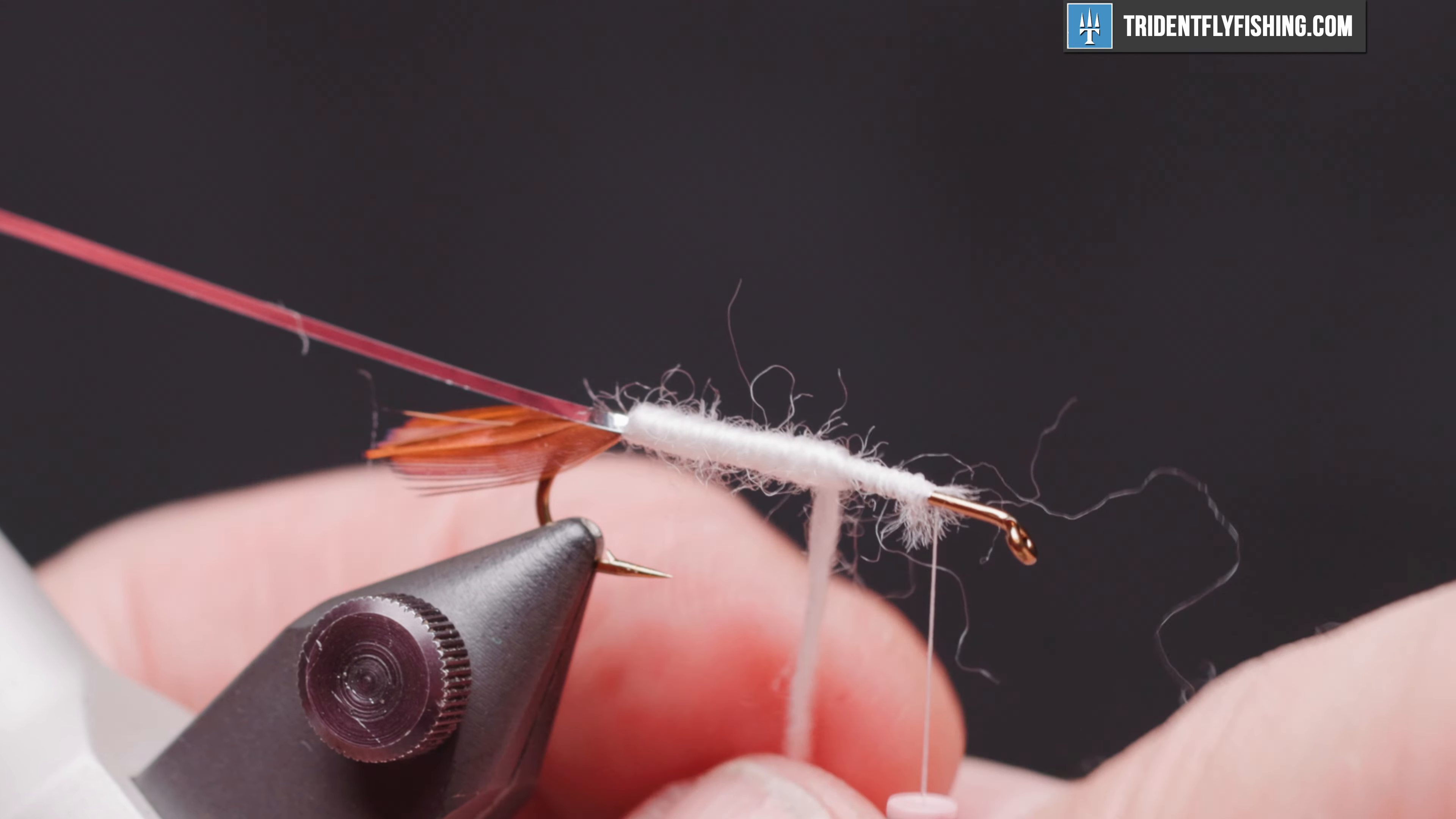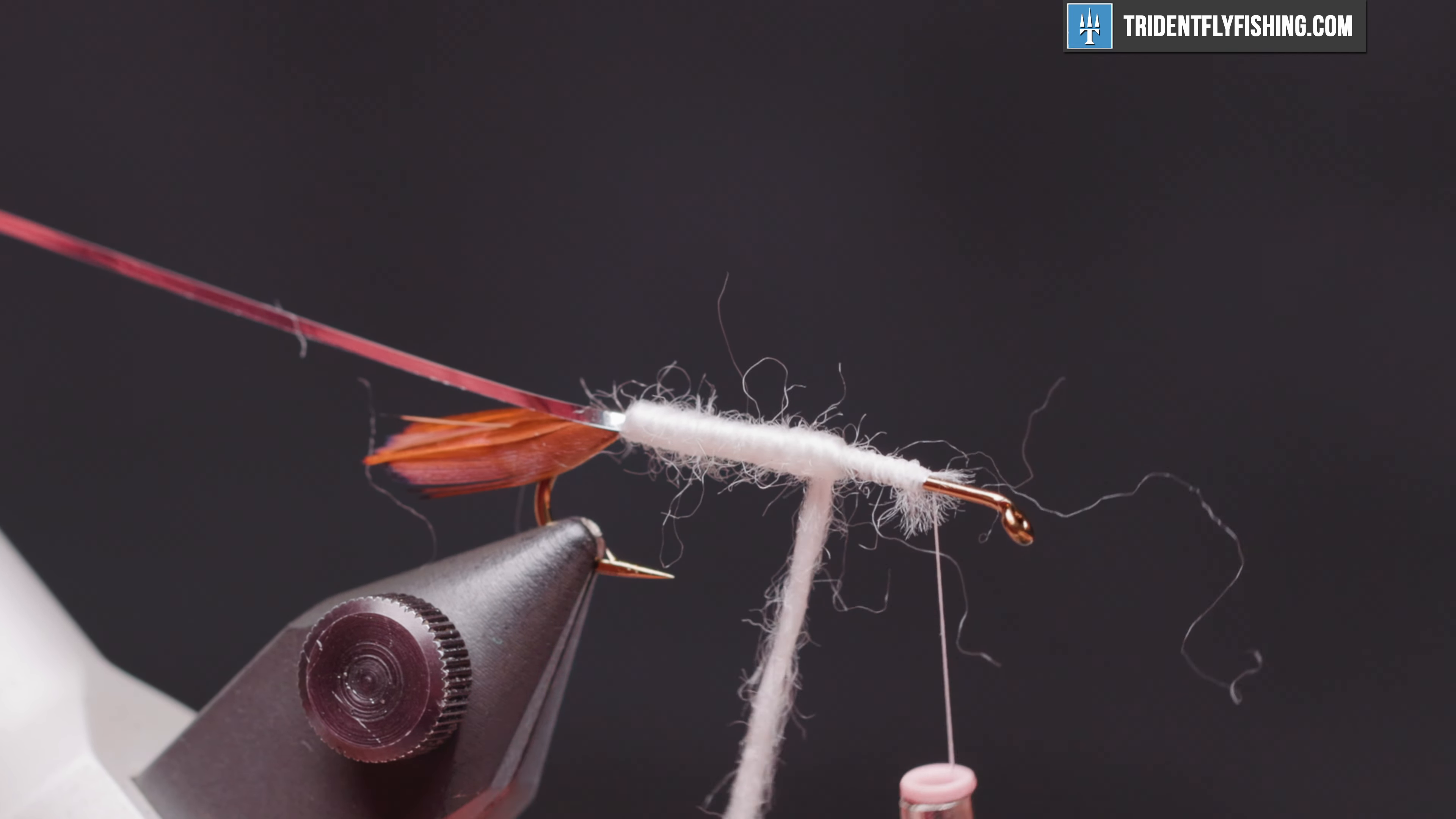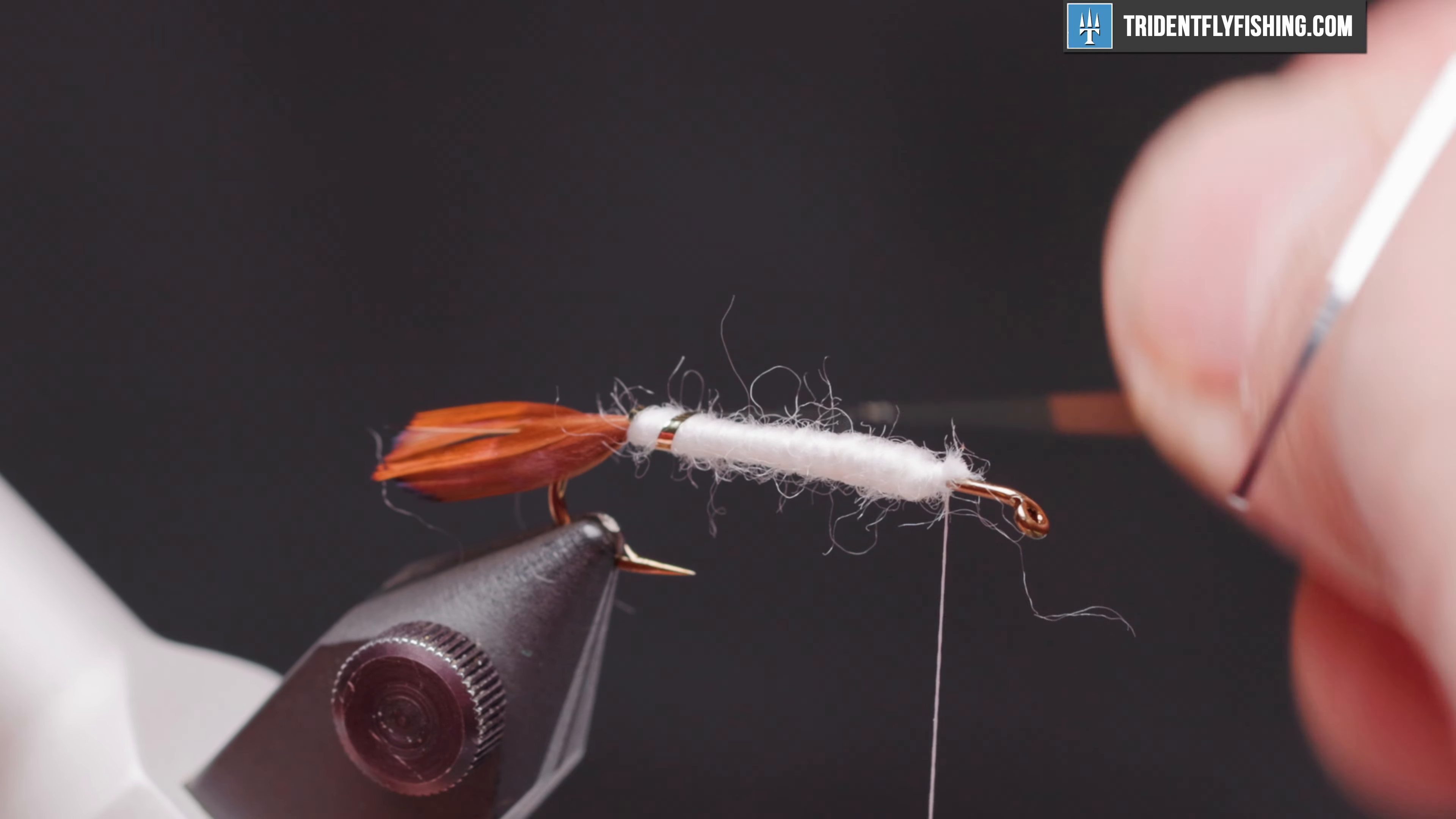And we'll just wrap this forward. And as we start to get up towards the end, we'll overlap the wraps just a little bit to give it a bit of a tapered appearance. Cut off our excess.